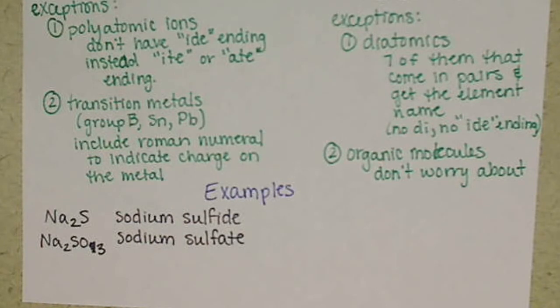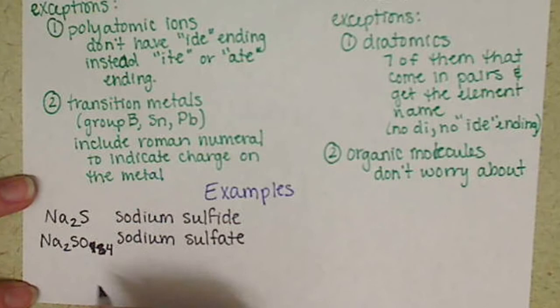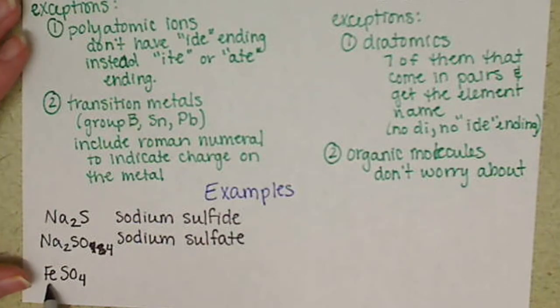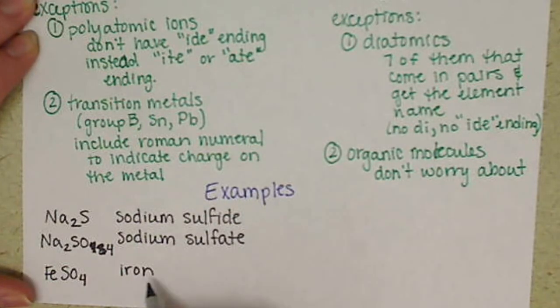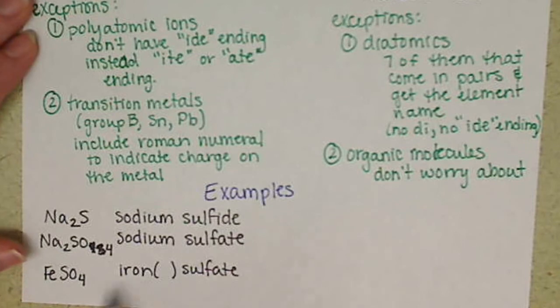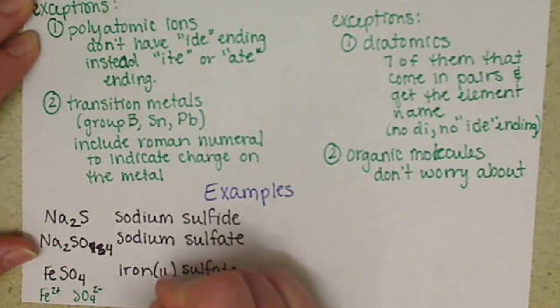As another example, let's use a transition metal: FeSO4. Our basic name so far is iron and sulfate. But remember, iron is a transition metal, so we need a Roman numeral there. The sulfate ion is SO4 two minus. We only have one iron, so it has to be two plus. So we know this is iron(II) sulfate.